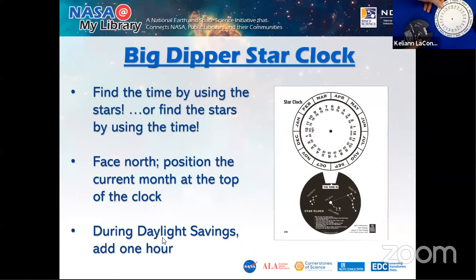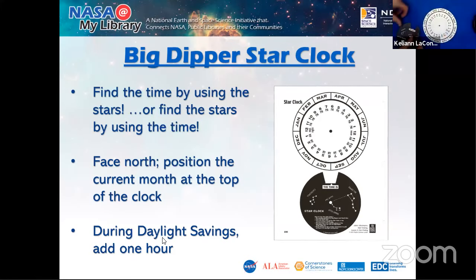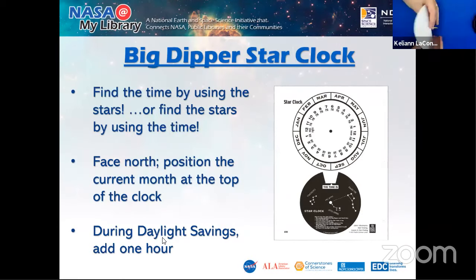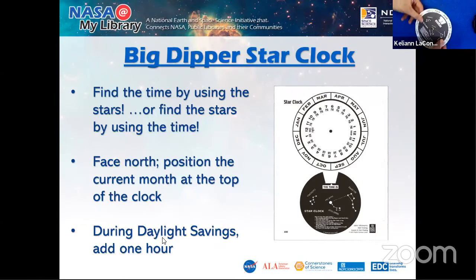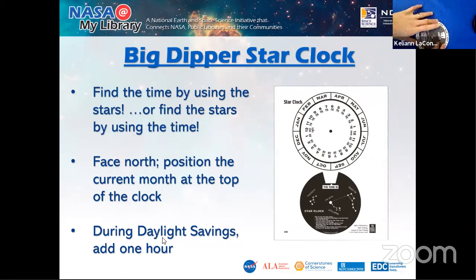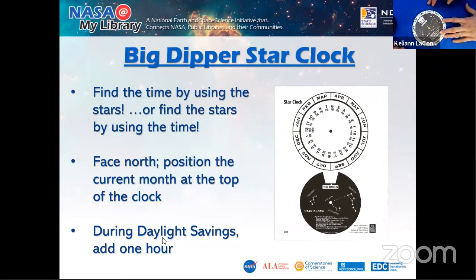The activity comes on one sheet — your first step is to cut out the two pieces. It's one sheet per kiddo. You put the base down, place the Big Dipper part of the star clock on top, and secure it with a brass fastener so it rotates. You point your star clock toward the north. So for example, in February at 9 PM, you would know the Big Dipper would be in the upper right quadrant. If you're in daylight savings time, add one hour to the reading.